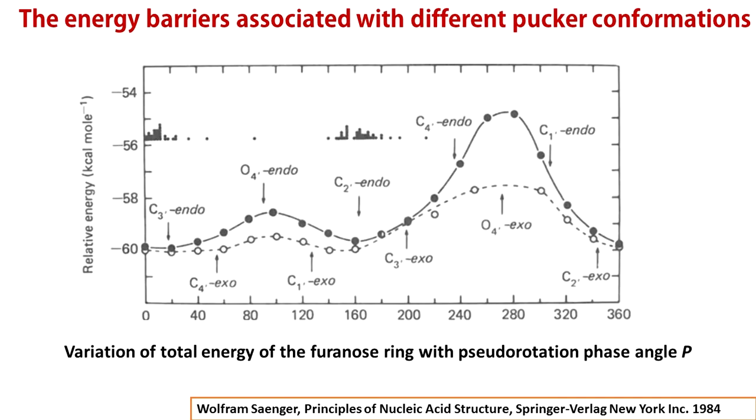So you see, the pseudo rotation wheel implies that the deoxyribose puckers are free to interconvert. Obviously, there are energy barriers between major pucker conformations. Here is the plot of conformational energy of a deoxyribose furanose ring for different pucker conformations. You can clearly see C2' endo and C3' endo are the energetically most stable conformations. Remember that these two conformational states are required to bind DNA and RNA polymerases respectively.